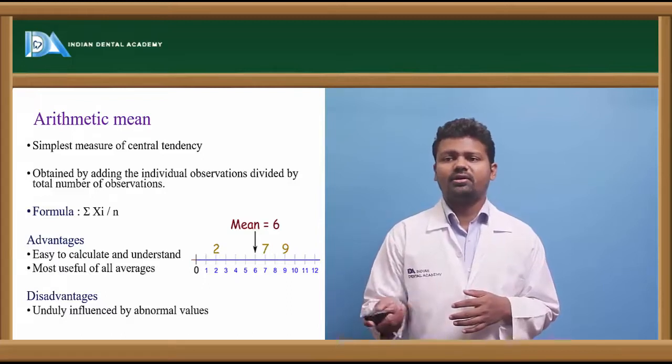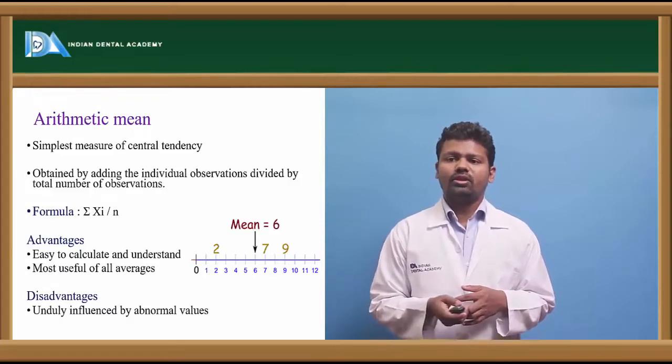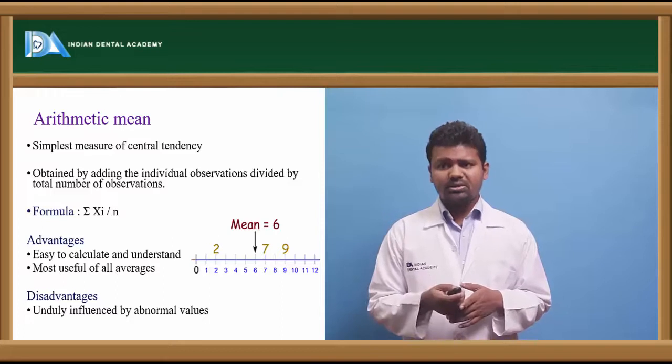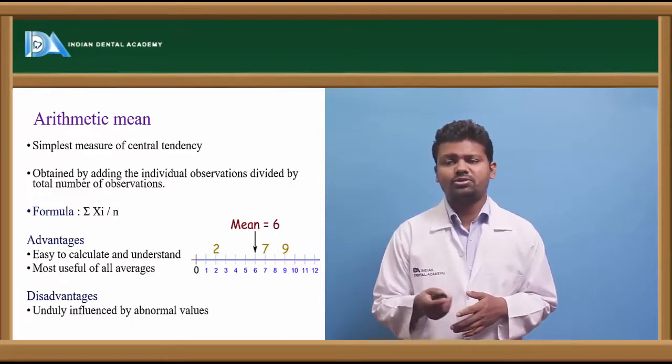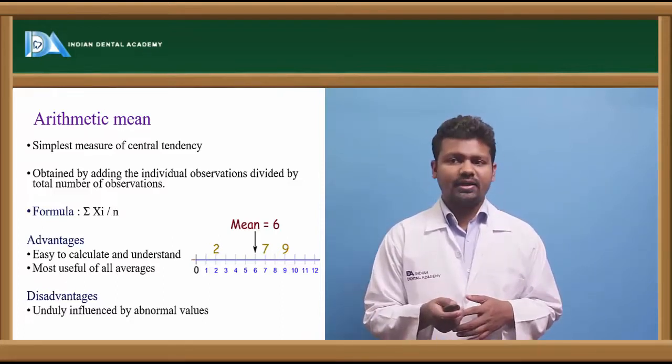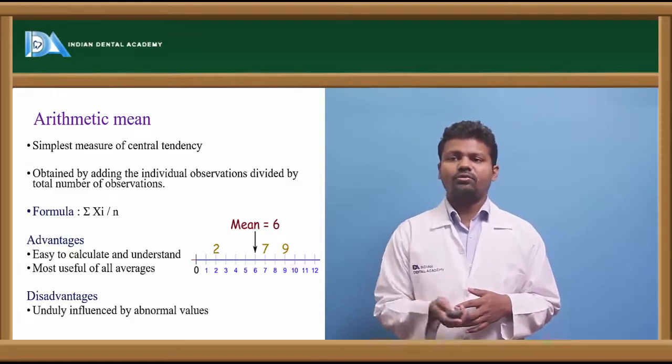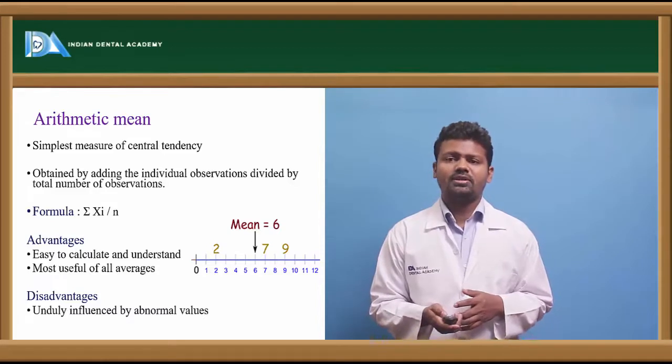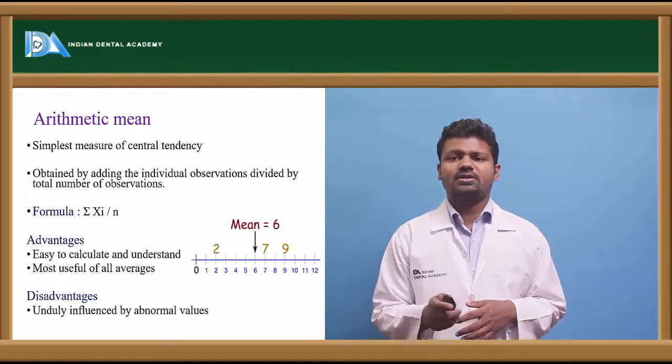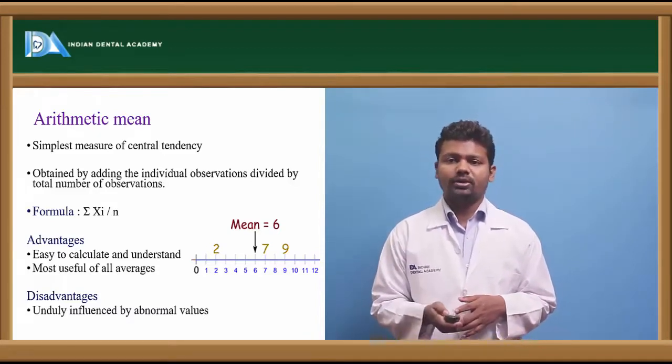For example, if you want to know the mean number of children attending the dental clinic, you calculate the total. For values 1 to 12, the mean is 6. The formula is Σxi/n, where xi is the sum of values and n is the number of observations.